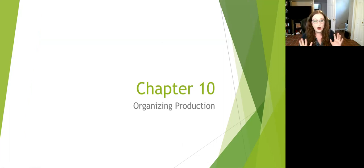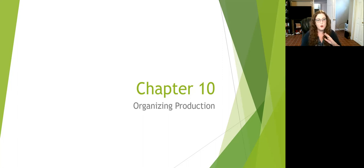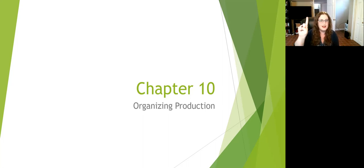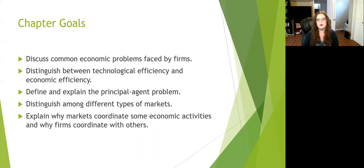So chapter 10, let's talk about organizing production. A firm has got to make something, and the question is how do we organize this production? How do we put together our four factors of production? All the way back to the beginning of this course, we had our four factors: land, labor, capital, and entrepreneurship. But how do we actually put those together? That's what we're going to be talking about in this chapter.